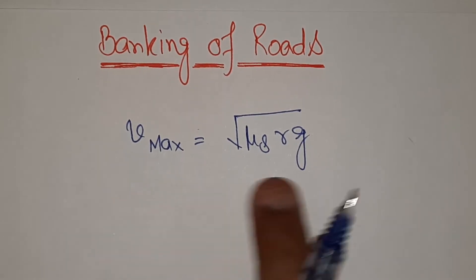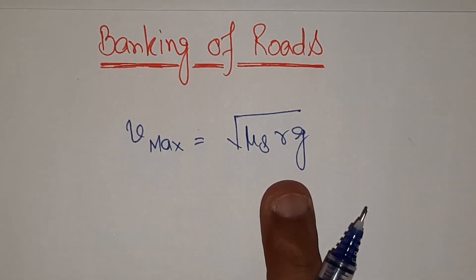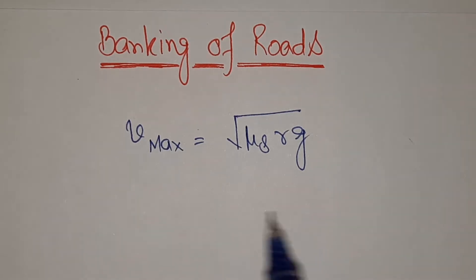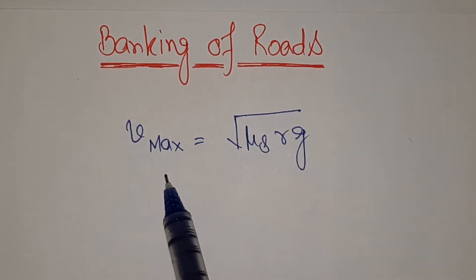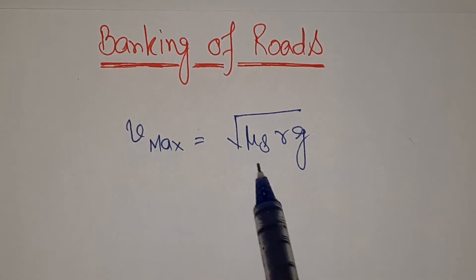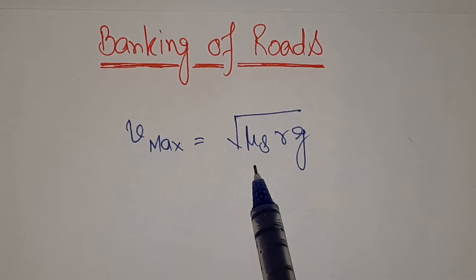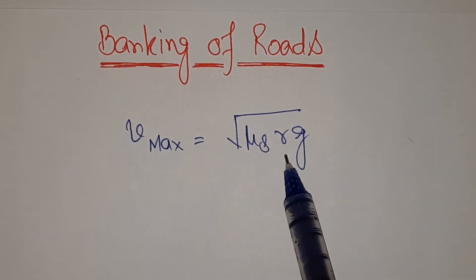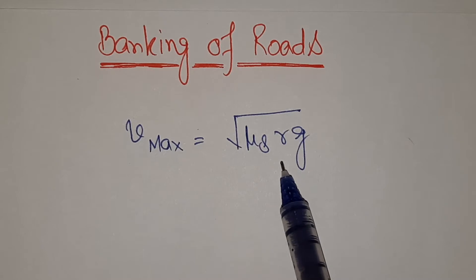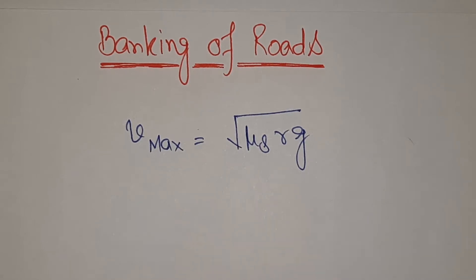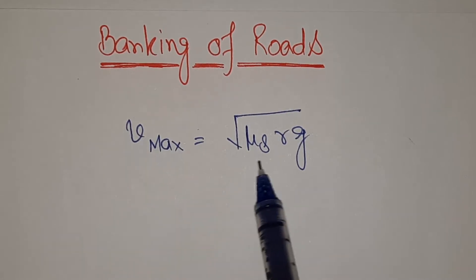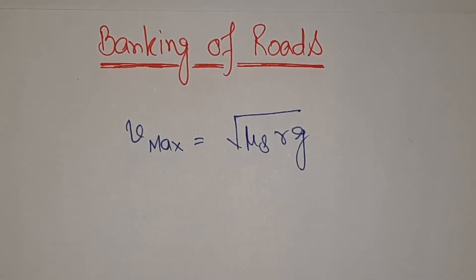Maximum velocity for the safe turn we calculated. We discussed how to maximize this particular velocity by increasing the coefficient of static friction. The second way was increasing the radius of the curved path or radius of the turn. However, relying on this coefficient of friction when a body is moving on the road is a bit difficult — we can't rely on this.